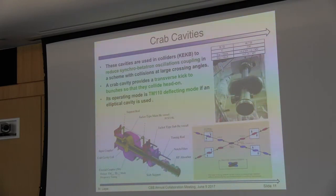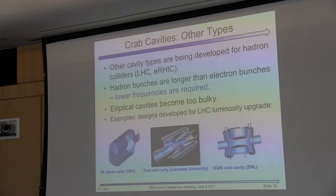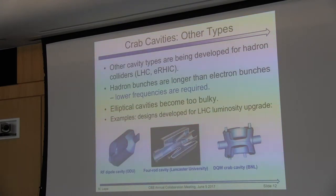Then there are crab cavities — these have fields that kick the beam sideways. In a collider, when beams come in at some angle you can twist the beam so that the particles interact more with each other, increasing luminosity. This has been done at KEKB, for example. These transverse-field cavities can look quite different; here are some designs for the Large Hadron Collider which will have crab cavities to increase luminosity. They need fairly low-frequency cavities and you can see they look very different — still a metal shell made of superconducting niobium, but with a very different shape because different modes are used to kick the beam sideways.